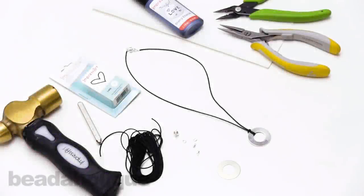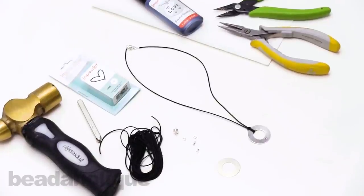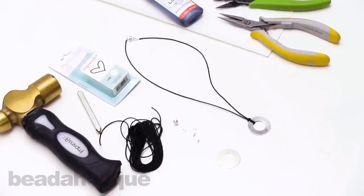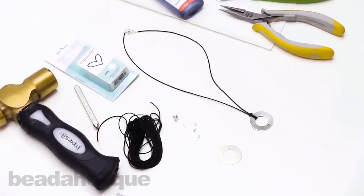Hi, this is Kat with Beadaholique, and in this video I'm going to show you how to make a personalized necklace using a circular donut stamping blank and waxed cotton cord.